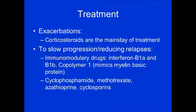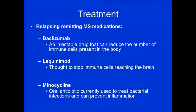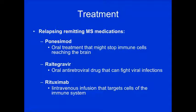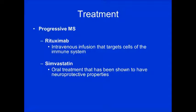Immunomodulatory drugs include interferon beta-1a and beta-1b, and copolymer 1, which mimics myelin basic protein. Other medications include cyclosporins and methotrexate. For relapsing-remitting MS, various medications are used: some injectable agents reduce the number of immune cells, others stop immune cell migration, and minocycline — an oral antibiotic — is used to help prevent inflammation. For progressive MS, treatment includes infusions targeting cells in the immune system, and simvastatin, which has shown some neuroprotective properties.